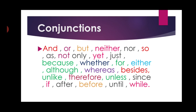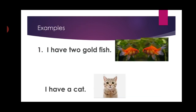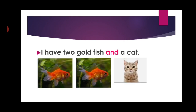Now students, look at the examples on your screen. You can see some fish and a cat. The two separate sentences are: 'I have two goldfish.' and 'I have a cat.' These are two different sentences, but I want to make them a single sentence. So on the screen you can see: 'I have two goldfish and a cat.' I have joined these two sentences with the single word 'and', which is called a conjunction.